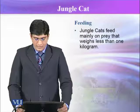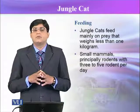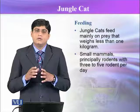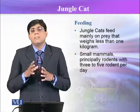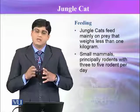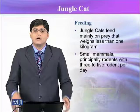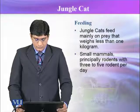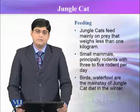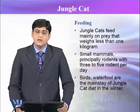The back of the ears is reddish with conspicuous apical hair tufts, and the body color is sandy gray. The jungle cat feeds mainly on prey that weighs less than one kilogram. Generally it prefers mammals, and among mammals it prefers rodents — principally three to five rodents per day. Birds and waterfowl are the mainstay of the jungle cat diet in winter, particularly when the season changes and they need more energy.